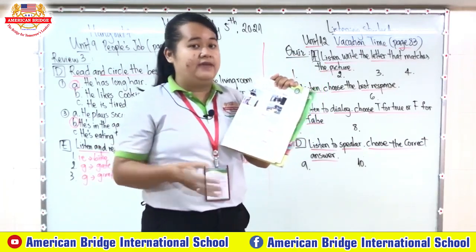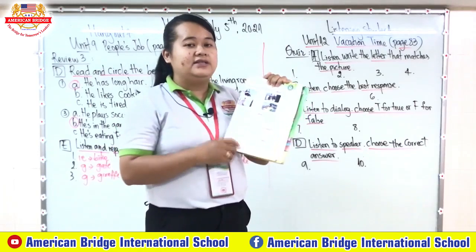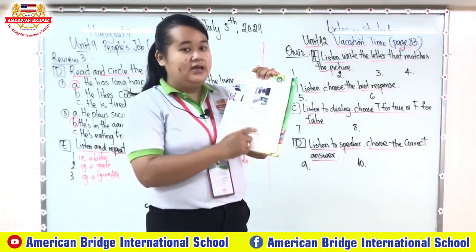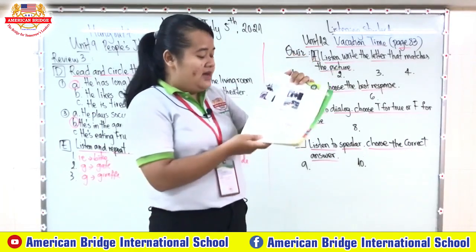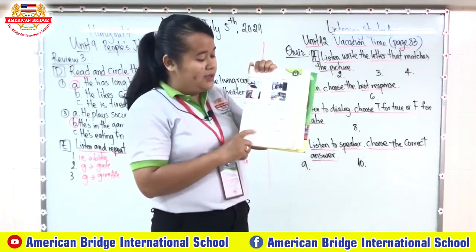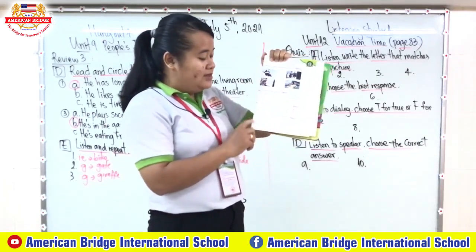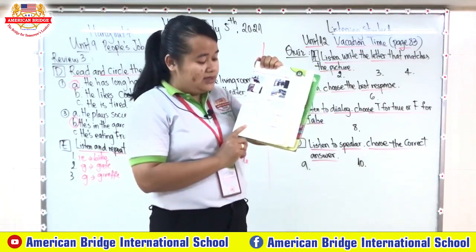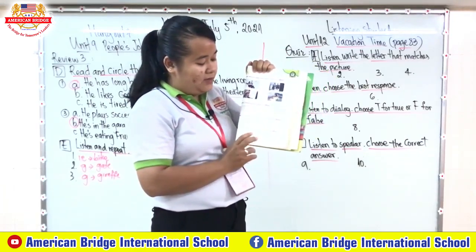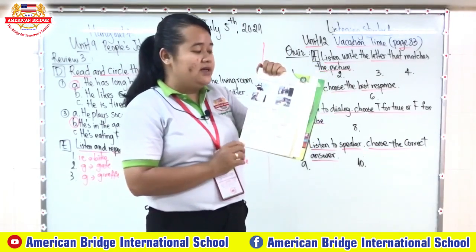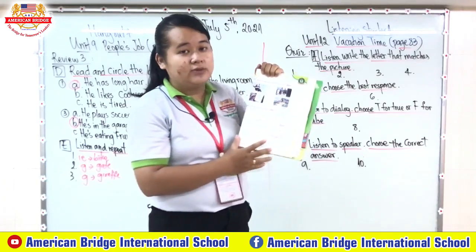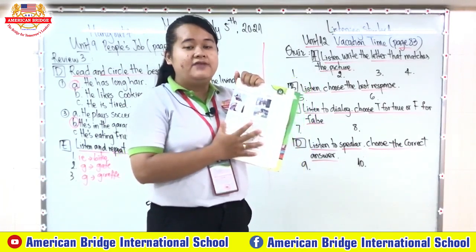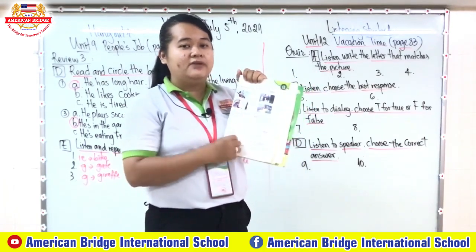Remember, T means correct and F means wrong. For letter D: listen to the speaker and choose the correct answer. They have a question with answers A and B, so listen carefully and choose the correct answer. Right now teacher will provide you all the listening tracks related with exercises A, B, C, and D. Listen carefully and complete the exercises.